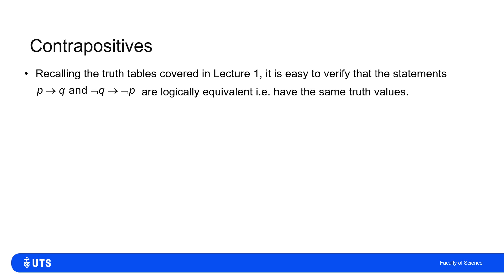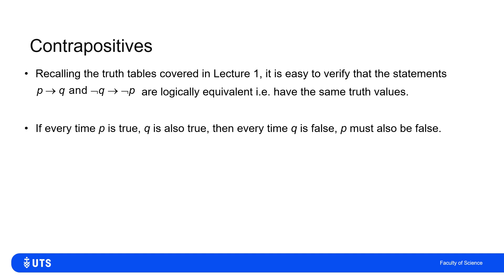Thinking back to the material on truth tables, we can see that the statements 'p implies q' and 'not q implies not p' have the same values in their truth tables, so they are logically equivalent — they tell us the same thing. If every time p is true then q is also true, that means every time q is false we must know that p is also false.